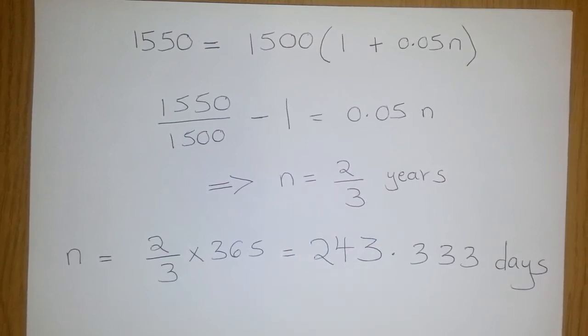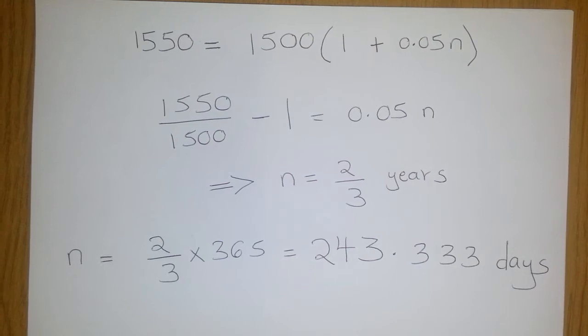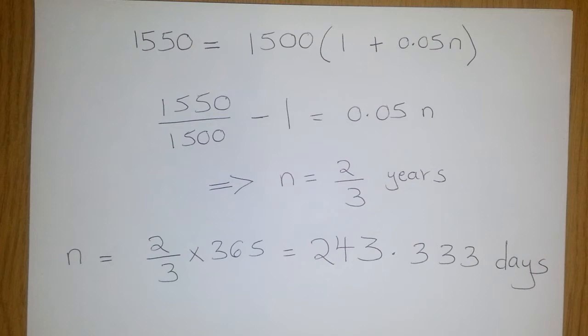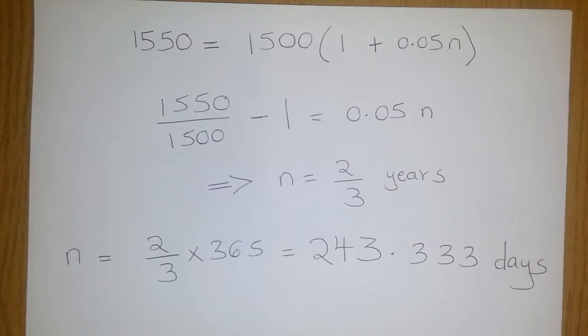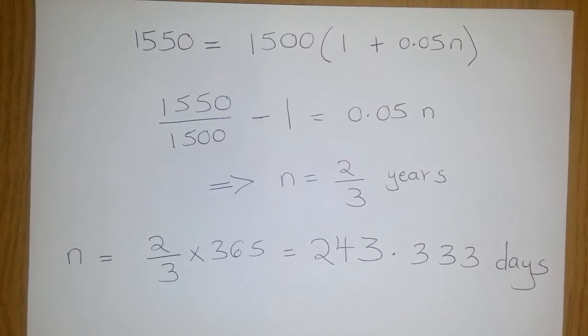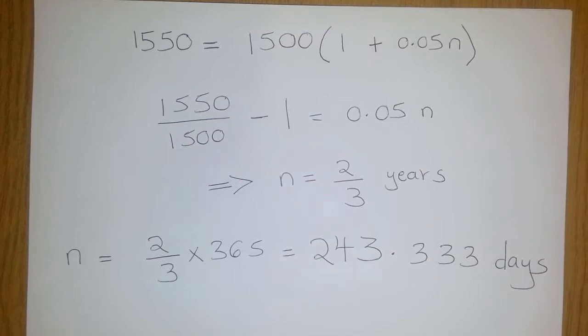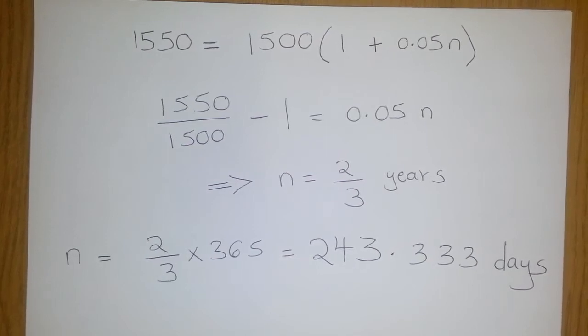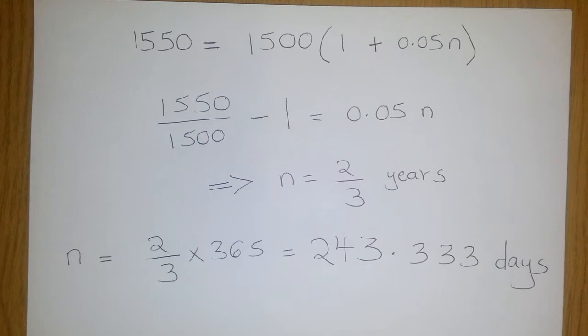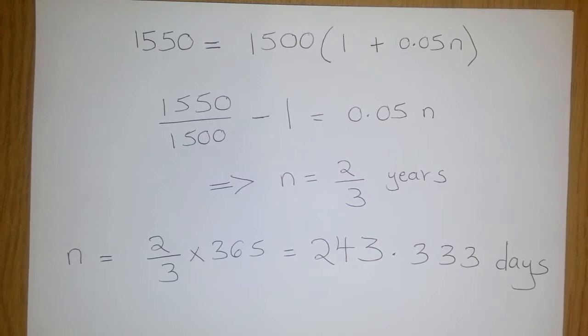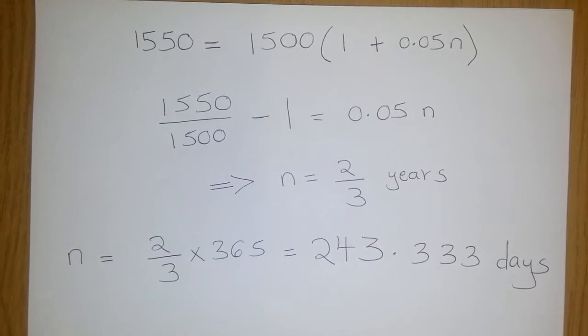Now, 2/3 times 365 gives you 243 days, such that it takes 243 days for an amount of 1500 to accumulate to 1550 at a rate of simple interest of 5% per annum.